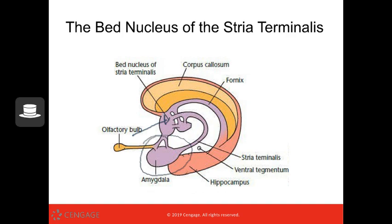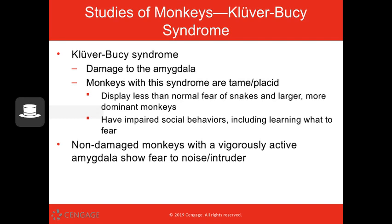Here we have our amygdala, and right above it, we have the bed nucleus of the stria terminalis. Kluver-Bucy syndrome is a disorder associated with damage to parts of the brain — the temporal lobes or even the amygdala. We've seen monkeys with Kluver-Bucy that are more tame and placid; they don't display normal fears when presented with a snake or when around a more dominant monkey. They also have impaired social behavior and have a very hard time learning what to fear.